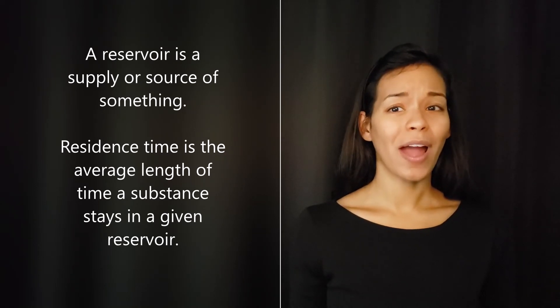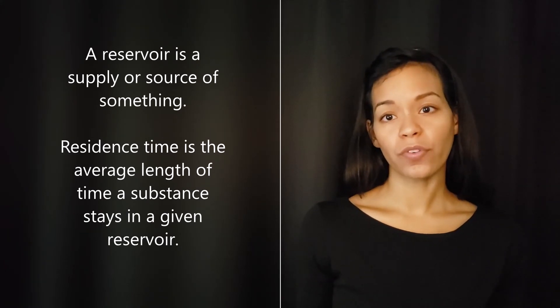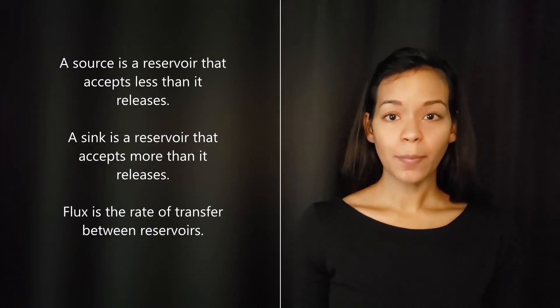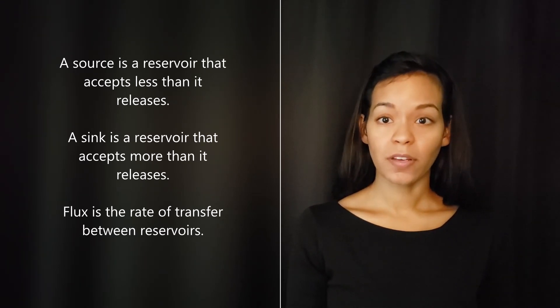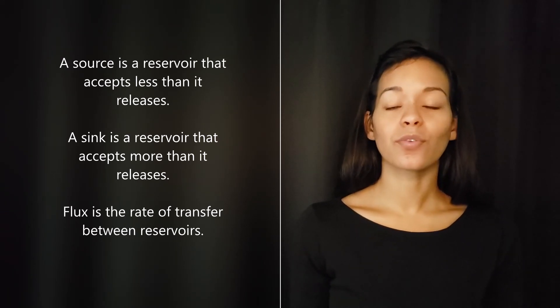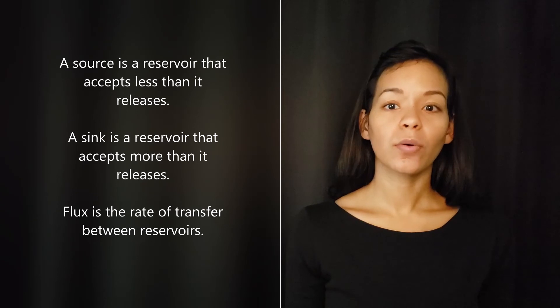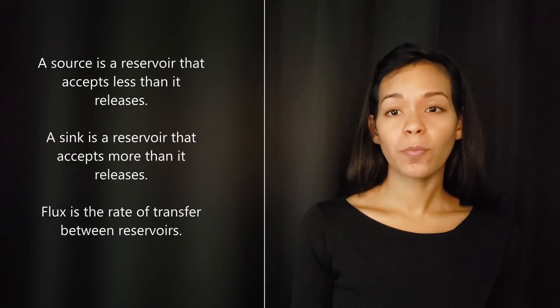A ewe, a cow, grass, sedimentary rocks, and the atmosphere are all reservoirs for carbon, for example. When a reservoir releases more material than it accepts, this is called a source. When a reservoir accepts more material than it releases, this is called a sink, and flux is the rate at which material moves between reservoirs. Understanding the different ways that reservoirs behave is very important to understanding the various biogeochemical cycles.